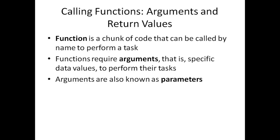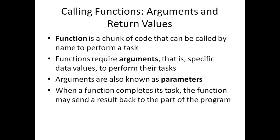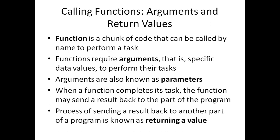Arguments are also known as parameters in a function. After performing the function's task, the function may send a result back to the program. We call this process returning a value. For example, if you use the round function, round of 7.8 will return the value 8. That process is known as returning a value.